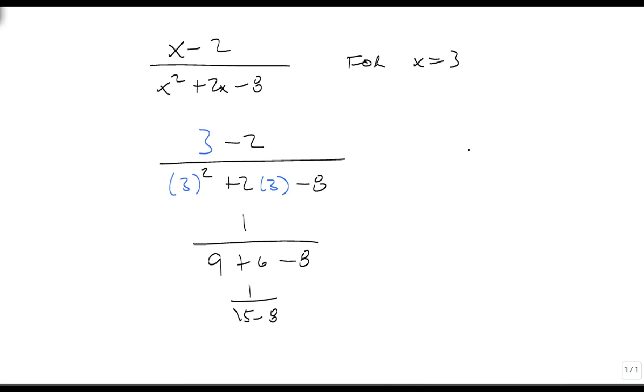So my answer is 1 over 7. When x is 3, this rational expression is 1 over 7. So wherever you see that variable in the original, just replace it with the number.